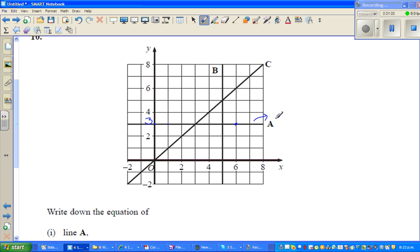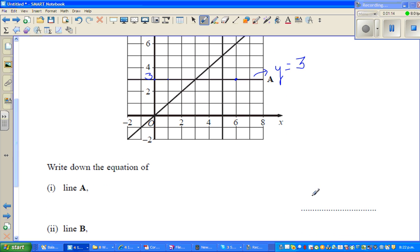So this line is called y equals 3. The reason being each point corresponds to 3 on the y-axis. So the line A is y equals 3.